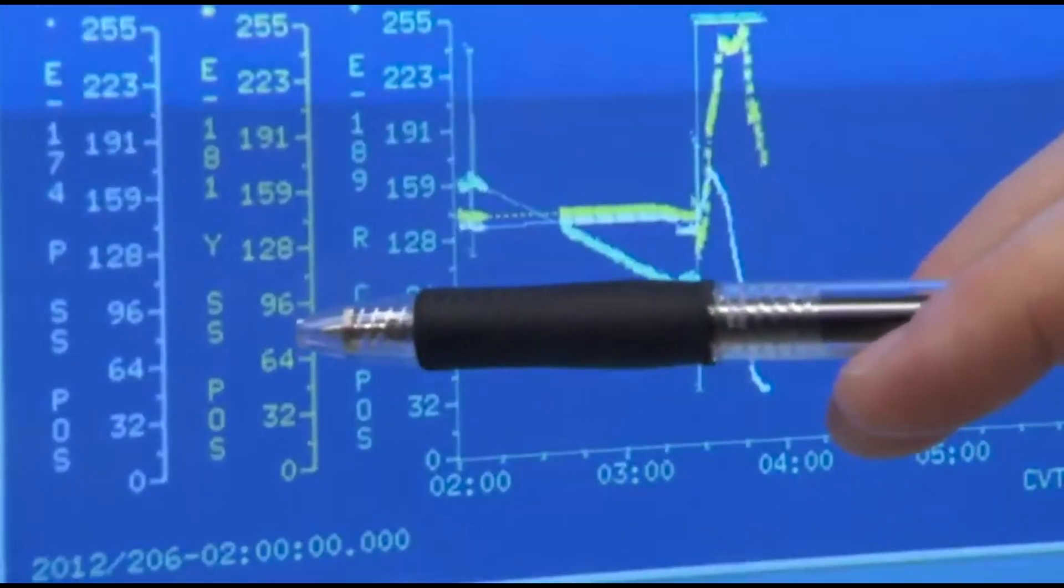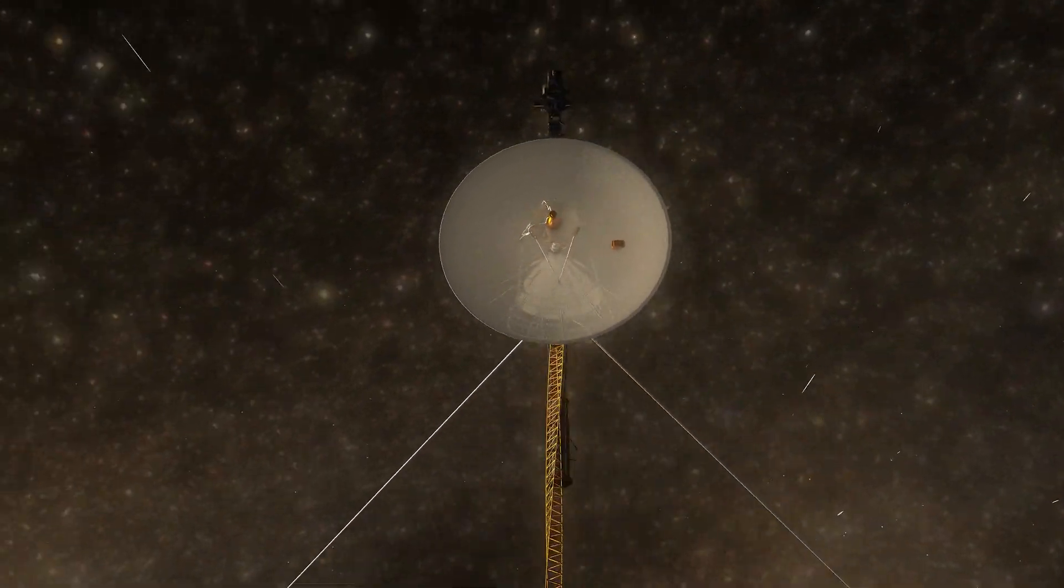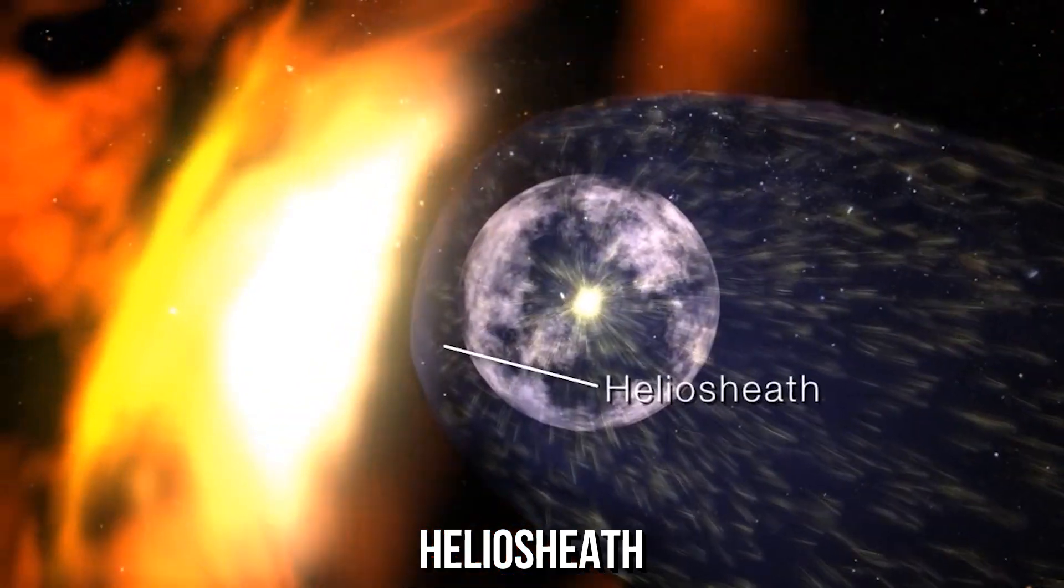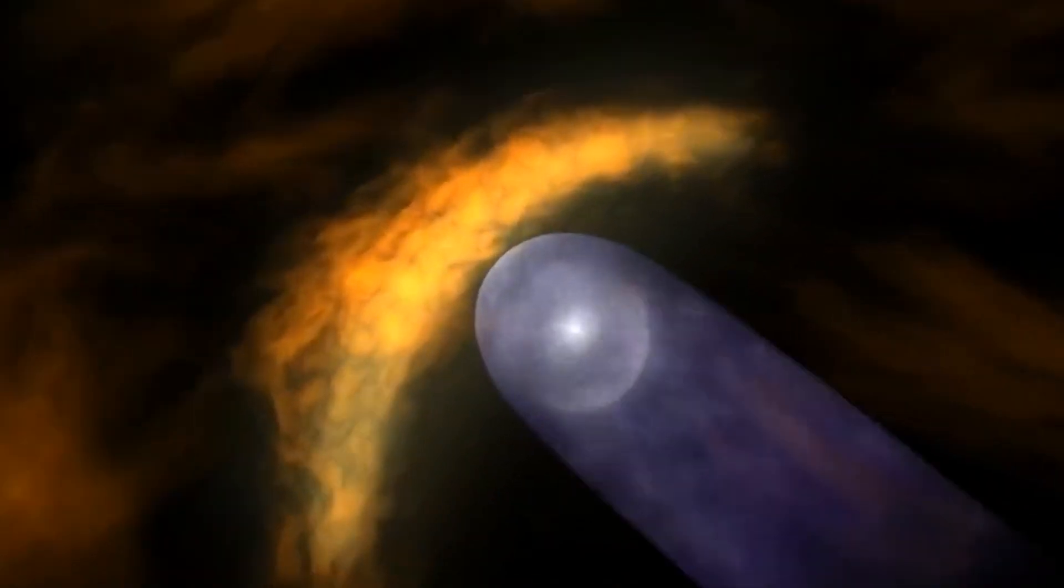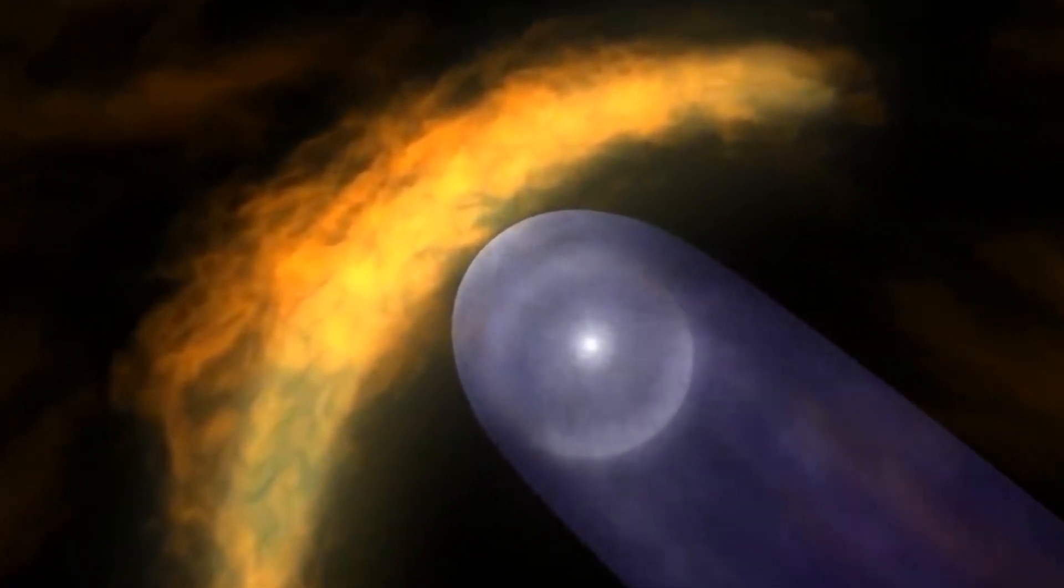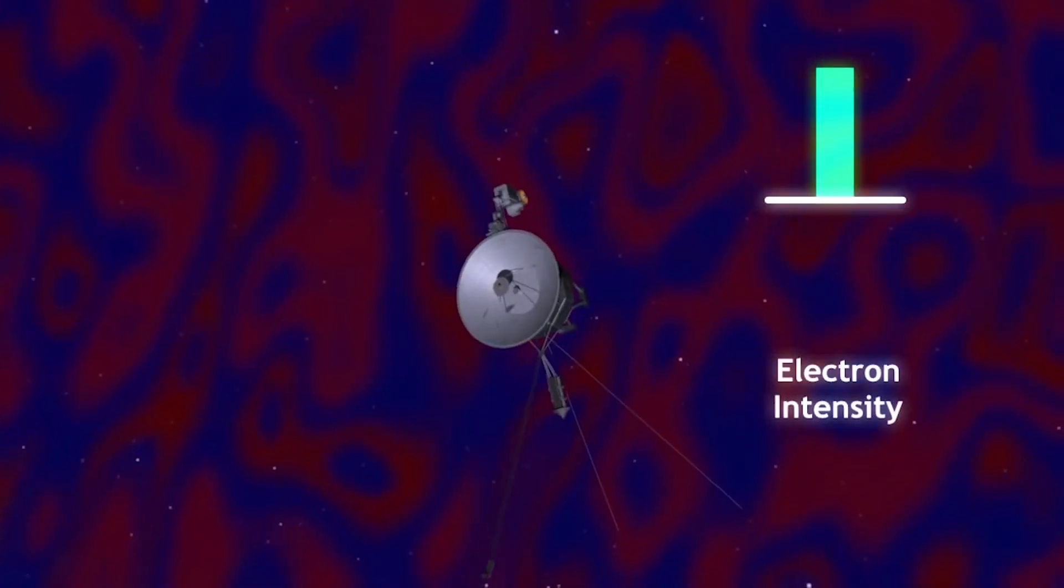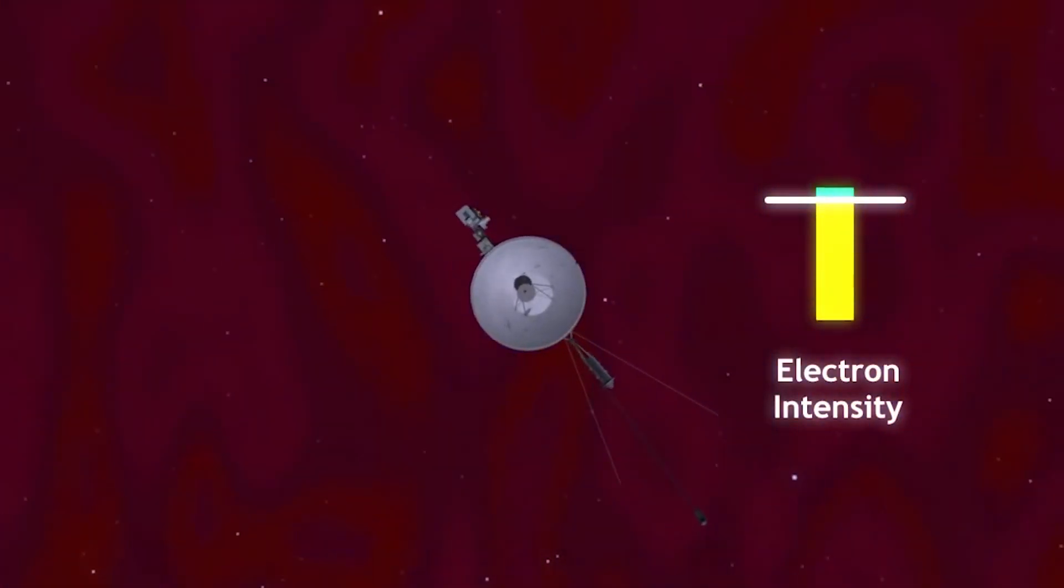One of the most significant discoveries made by the Voyager spacecraft was the existence of a region in space called the Heliosheath. This region is a transitional zone between the heliosphere and interstellar space, where the solar wind slows down and becomes turbulent. The Voyager spacecraft provided us with the first direct measurement of the heliosheath and helped us to understand its structure and dynamics.